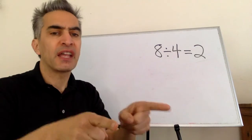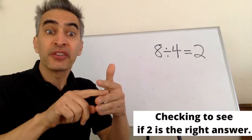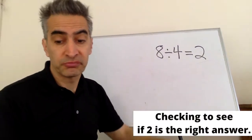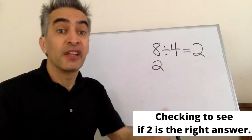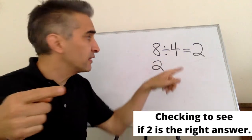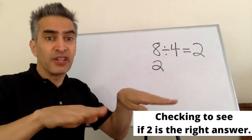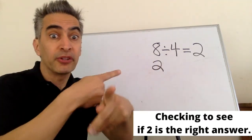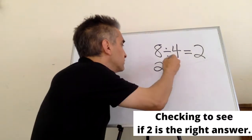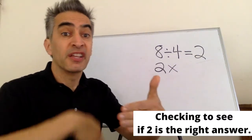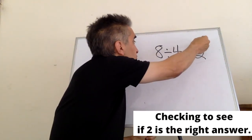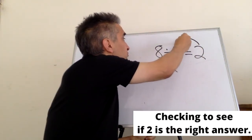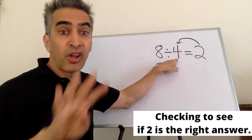Next, check the answer. Start with the number two. Next, the opposite of division is multiplication. The next number we use is four.